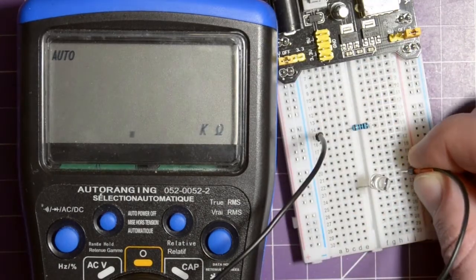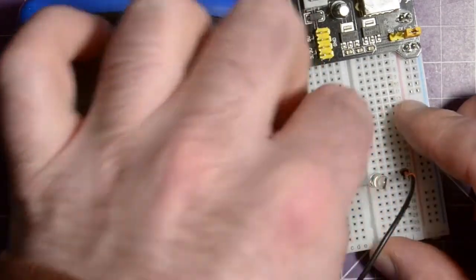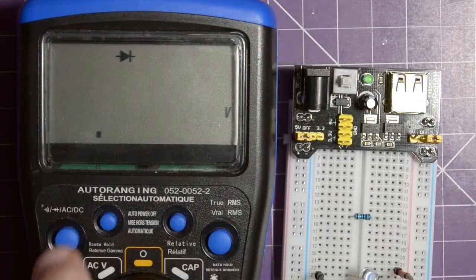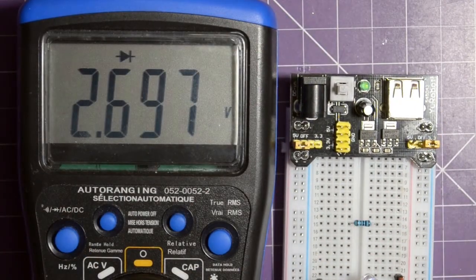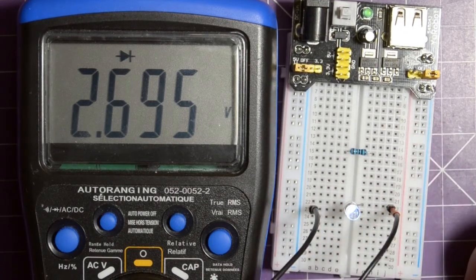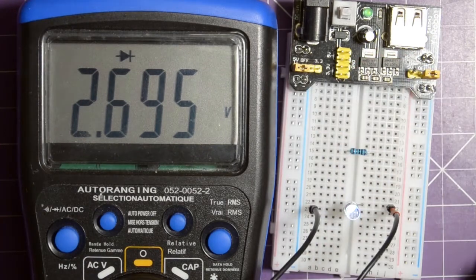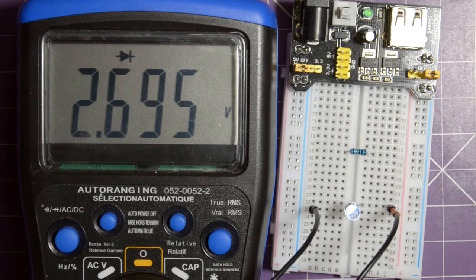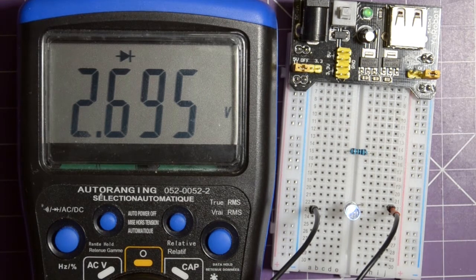So let's try our LED now. Trying to get these in the correct holes. Switch this to diode mode. There we go. Diode turns on. Face that up to the camera so you can see. So that diode is on and it's conducting at 2.695 volts. So like 2.7 volts. Pretty typical for an LED.